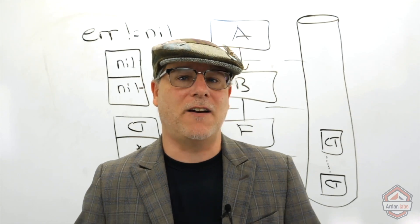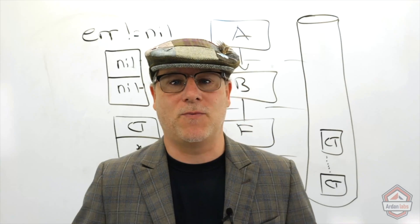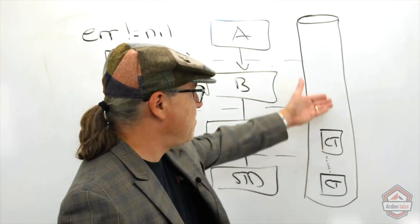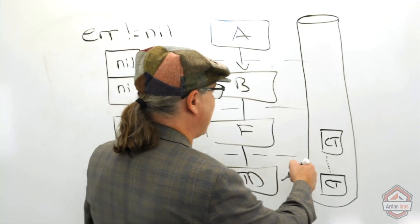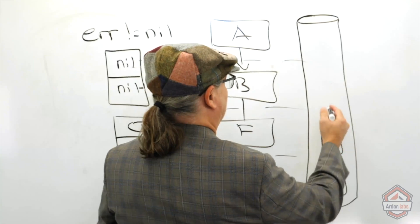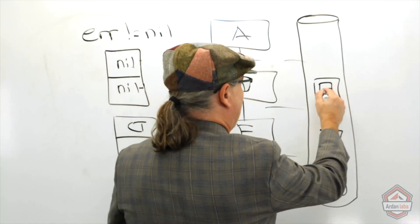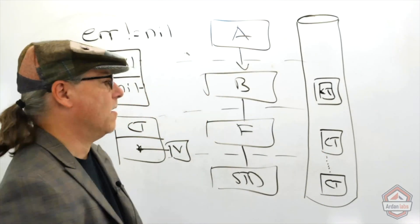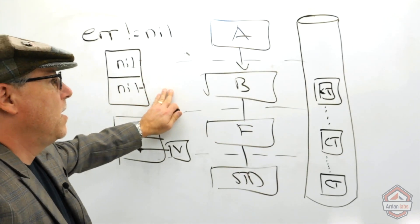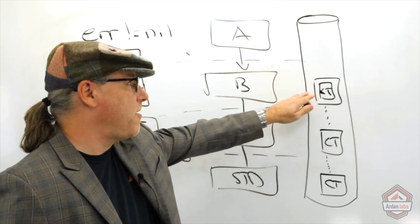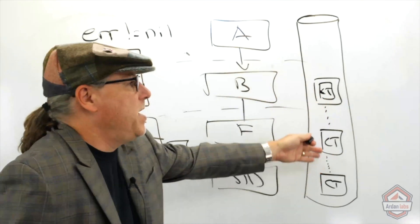If you're not allowed to handle an error, then you have only one choice: you have to wrap it with more context and send it back up the pipeline. So what the foundation function has to do is take this error, wrap it with more context, and send it up. Now here's a business layer function, and it says: is there a concrete value stored inside the error interface? The answer is yes - we're being signaled an error.